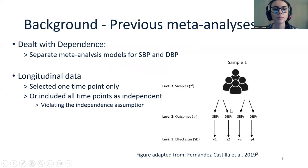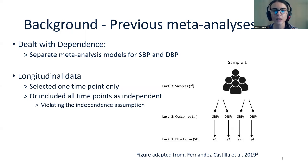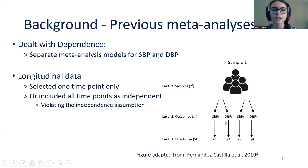Another important component of the data structure in this case study is the longitudinal nature of the effect measures. Because participants were followed for a long period of time, there were often multiple measures of both systolic and diastolic blood pressure in each sample. Most previous meta-analyses selected one time point, but one previous meta-analysis included multiple follow-ups as if they were independent, thereby violating the independence assumption. Longitudinal data can be included in a multilevel meta-analysis by treating the different time points as different outcomes also nested within each sample.